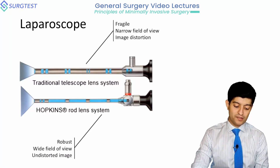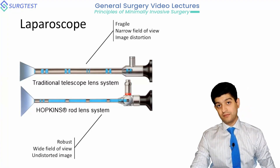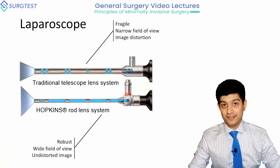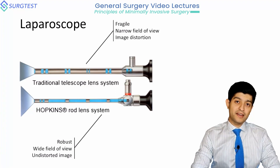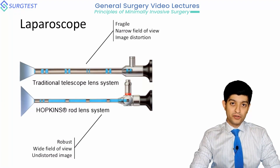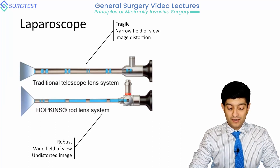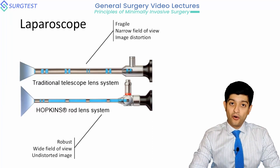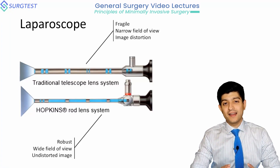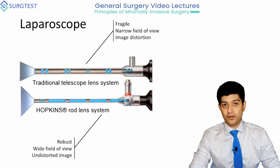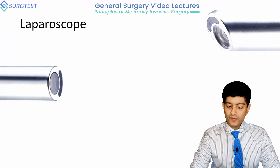The advantages of the Hopkins system are that it is relatively robust — though these are still sensitive instruments — and it offers an extremely wide field of view. As you can see in the diagram, it's much wider than the traditional telescope lens system. Because the cylinders are so long, there is also a lesser likelihood of seeing a distorted image due to production inconsistencies.